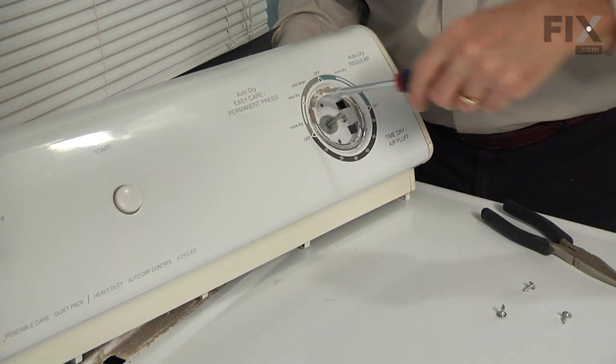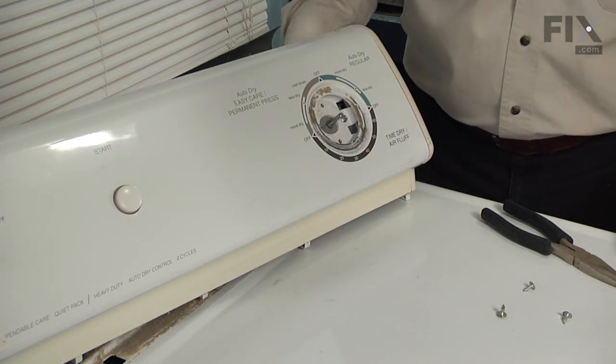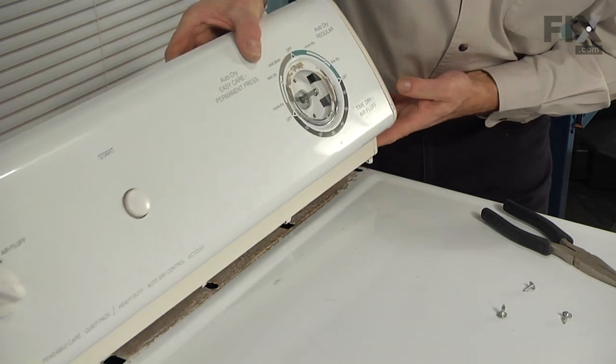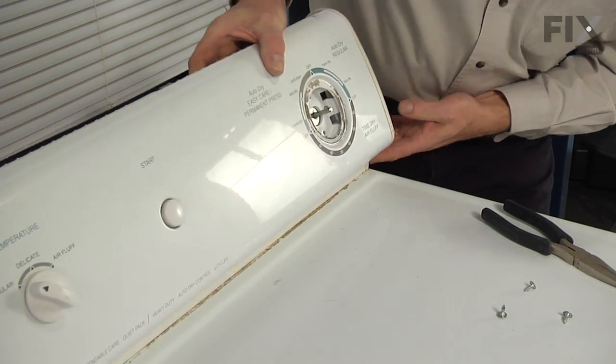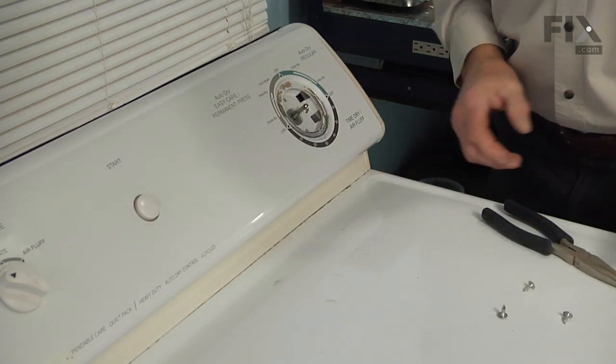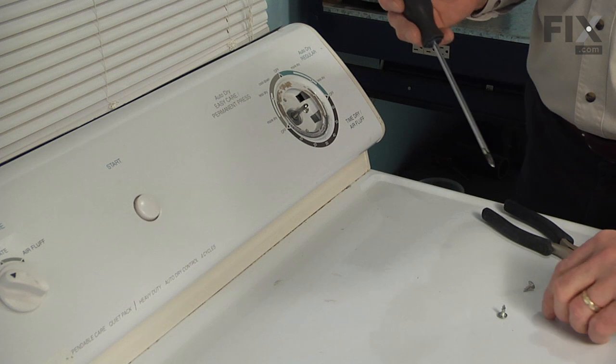Then secure the screws tightly and then line up the four tabs on the bottom of that console, rotate it down into position, and just pull it forward to make sure it's locked.